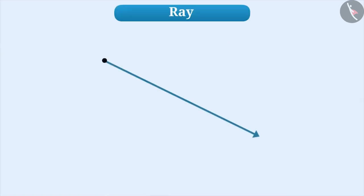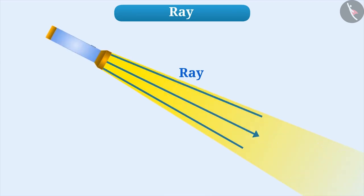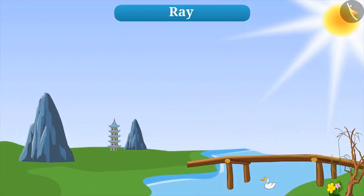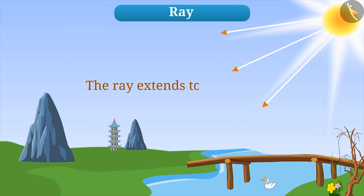Now let us learn what is a ray. Look at this shape. This is a ray. A ray begins at one point and extends without any end. Such as the rays coming from a torch, rays coming from the sun, etc. We show that the ray extends to infinity by putting an arrow in the direction in which the ray is moving.